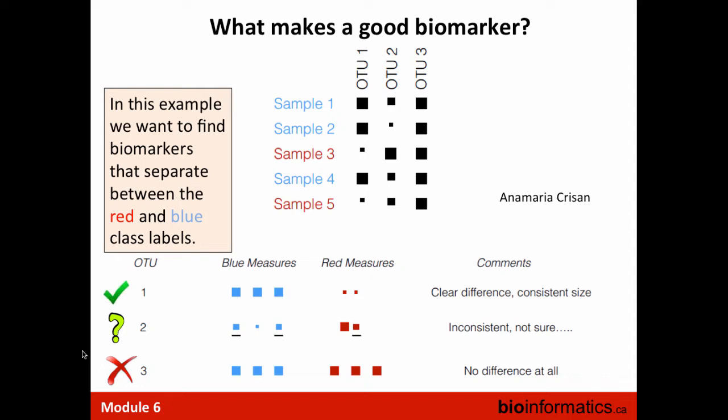Consider three OTUs for separating two sample classes: OTU one is very discriminatory — clear difference, consistent size between classes. OTU two is problematic due to overlap between samples. OTU three shows no difference at all and is useless. A good biomarker must be able to distinguish between different types of samples, and you should also consider what value you are adding compared to existing testing procedures.